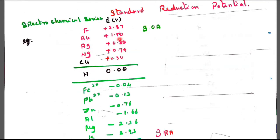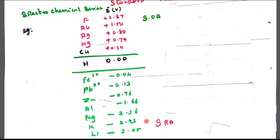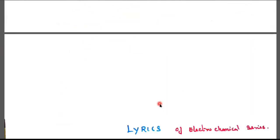Higher up series elements are strong oxidizing agents, and lower down series elements are strong reducing agents.